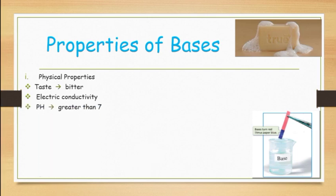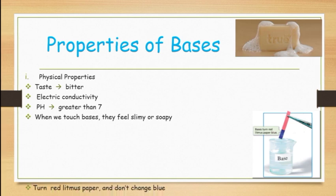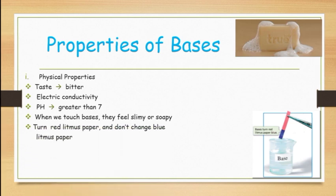The pH, or the degree of acidity and alkalinity of bases, is greater than 7. Another physical property: when we touch bases, they feel slimy or soapy in our hands. Bases turn red litmus paper blue and do not change blue litmus paper. This means when we immerse red litmus paper in a base solution, the color will turn blue, but blue litmus paper will not change.